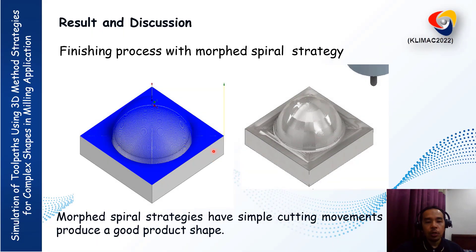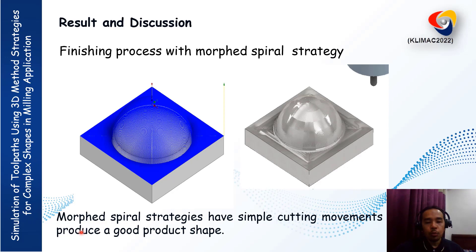Lastly, we have the Mop Spiral strategy simulation. In this simulation, we can see that the toolpath movement at the bottom is quite consistent, and the cutting movement can also produce a good shape.